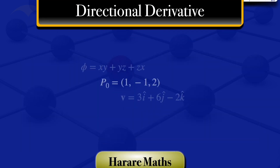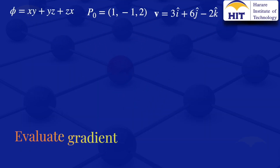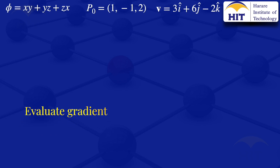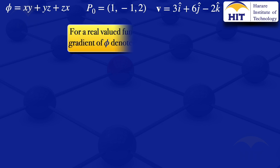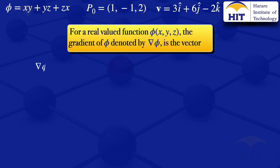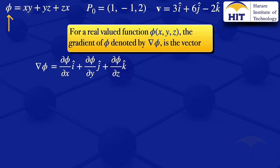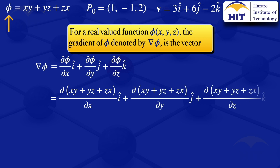The first step is to evaluate the gradient of the scalar field φ. Our φ has three variables, so the gradient will have three components. So ∇φ = (∂φ/∂x)i + (∂φ/∂y)j + (∂φ/∂z)k. We substitute our φ and evaluate each partial derivative.